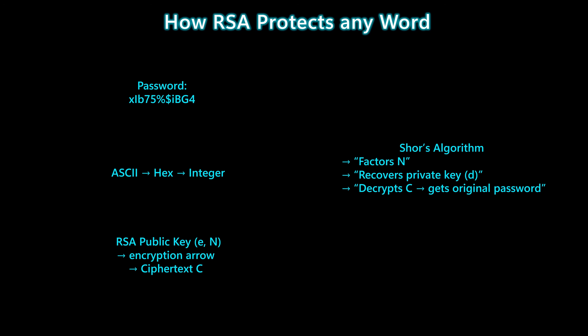That integer is what gets encrypted. In an RSA-based system, the encryption step uses the public key, which consists of a number E and a large composite number N. The system takes the integer form of the password, raises it to the power E, and reduces the result modulo N. That output is the ciphertext — the scrambled, protected version of the password. As long as an attacker cannot factor N, they cannot recover the private key, and the encryption remains secure.